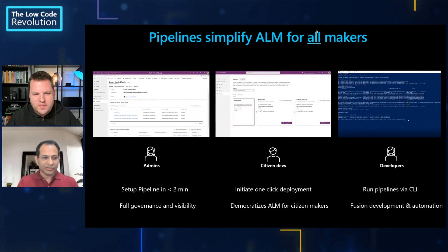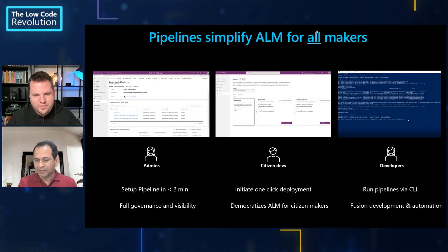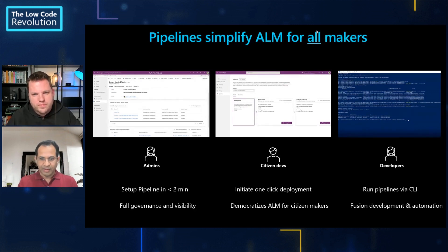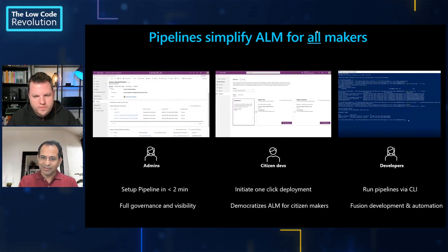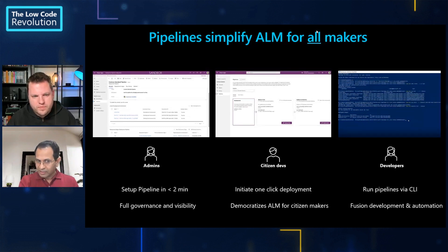There are three personas. First, the pipeline admin, who can configure pipelines quickly and has full governance and visibility. Then we have pipeline users — the personas who are deploying — which includes citizen makers using the UI in the maker portal, and pro devs who can use PAC CLI to automate deployment. Admins on the left have full access on the pipeline environment.